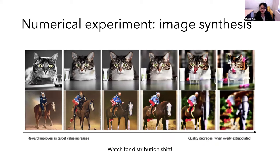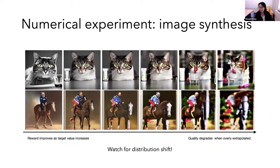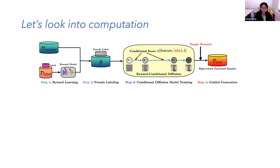We also ran an experiment on images trying to maximize reward related to contrast and colorfulness. There is a tuning parameter - the target reward we condition on. If we tune the target value too high, we condition on something too unrealistic and go out of distribution. When we go too far out of distribution, we go out of data support and manifold, and we see degradation of images as we extrapolate too much.